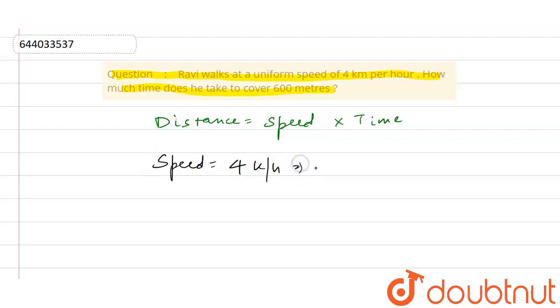Now we will change it into meters per second. To change kilometers into meters, we multiply by 1000. And to change hours into seconds, we multiply by 60 times 60.